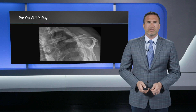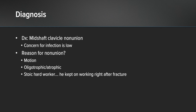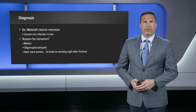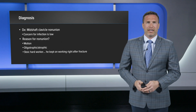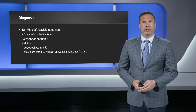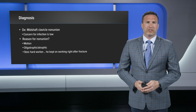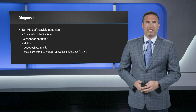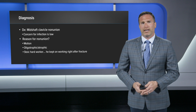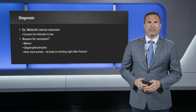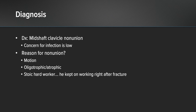I'm always looking for infection in non-unions. Overall, his diagnosis is a mid-shaft clavicle non-union. His infection risk was very low — no signs of erosiveness. I did not order a CT scan; sometimes we do for non-unions, but it was not going to help me in my surgical planning. I knew it was a non-union and it was mobile, so I let the CT go.